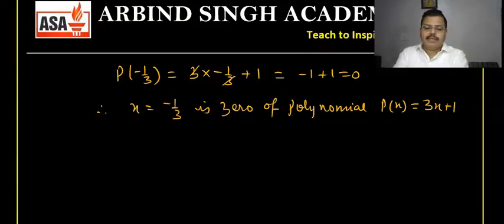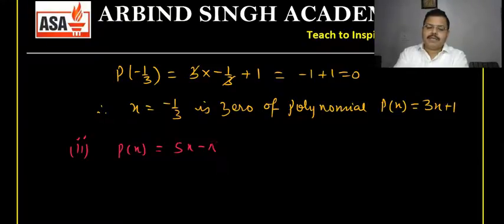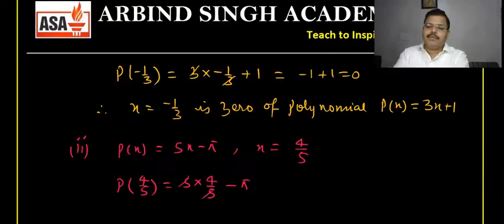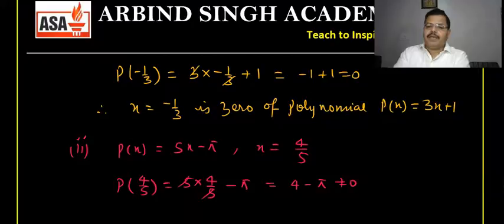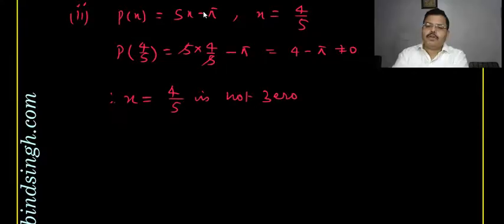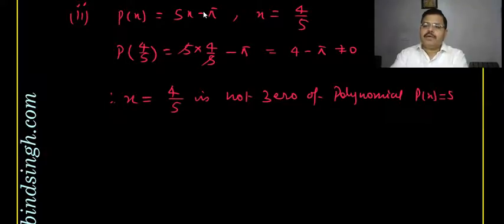Second: p(x) = 5x − 5, x = 4/5. Put x = 4/5: p(4/5) = 5(4/5) − 5 = 4 − 5 = −1, which is not equal to 0. Therefore x = 4/5 is not a zero of p(x) = 5x − 5.